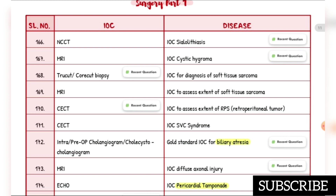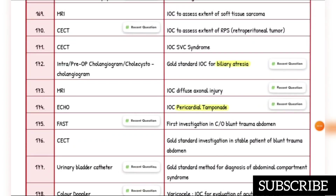Share this video to the needy ones. Investigation of choice for cholelithiasis is CCT. Investigation of choice for cystic hygroma is MRI. Investigation of choice for diagnosis of soft tissue sarcoma is true cut or core cut biopsy. Investigation of choice to assess extent of tissue sarcoma is MRI.